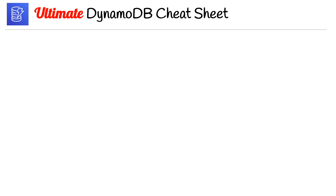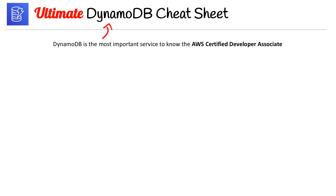We're on to the DynamoDB cheat sheet, and this one's more special than all the rest. I prefixed it with 'ultimate' because DynamoDB is the most important service you need to know to pass the AWS Certified Developer Associate — it's extremely critical to the certification.